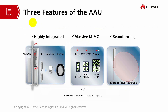What are the three features of the AAU? First, it is highly integrated — the antenna system is integrated with both radio unit and antenna unit, combiners, and jumpers, with no need for feeder. Second, massive MIMO can support more TX and RX, providing higher MIMO gain compared to previous systems, improving user experience and increasing system capacity. Third, it uses a beamforming solution for better, more refined coverage.